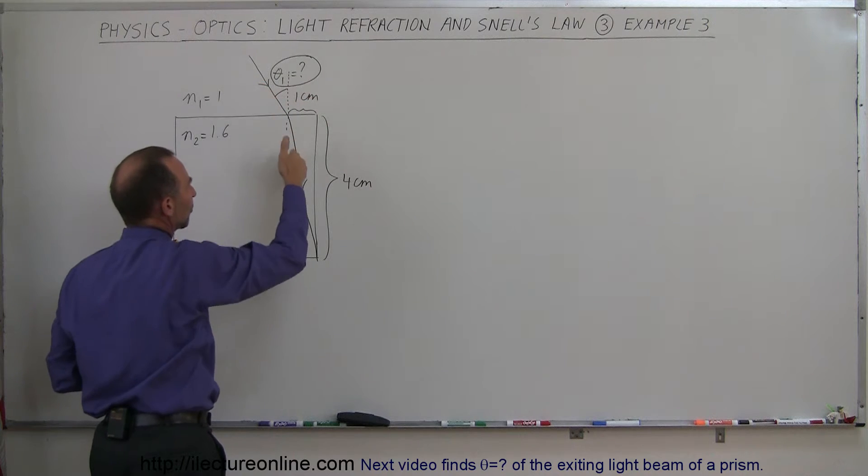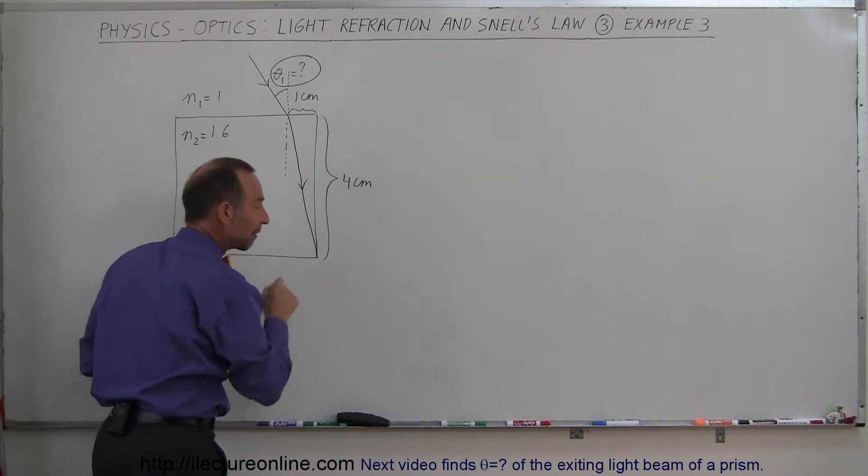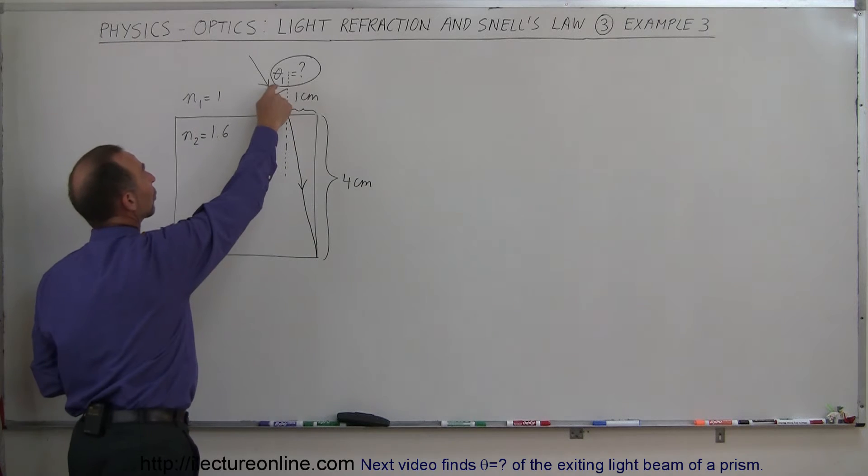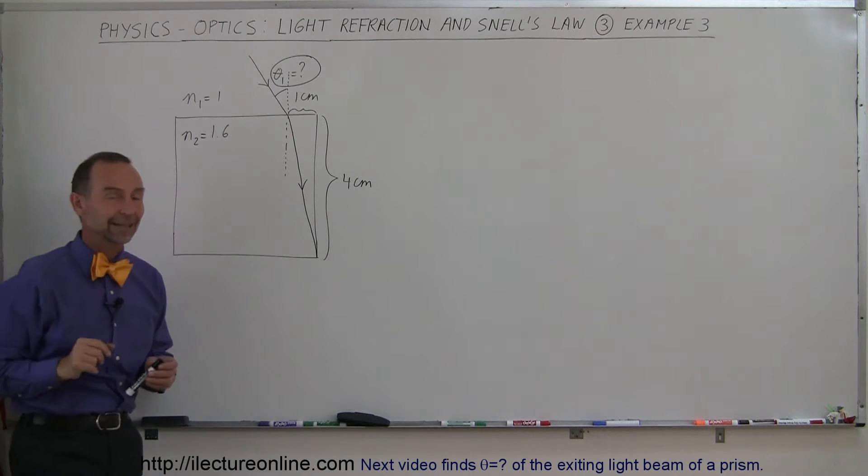Let's say we send the beam into the cube at a point 1 centimeter away from the very edge of the cube. We expect the beam to refract, and the objective is to have the beam hit the corner, the very corner at the bottom of the cube right there. And the question then is, what should the angle over here be so that the beam that's refracted into the cube will hit that corner exactly?